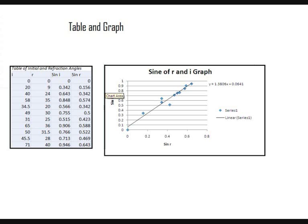The slope of the graph is 1.3806, which is the refractive index of the block. Refractive index is the velocity in which light travels through the medium, in this case, the block.